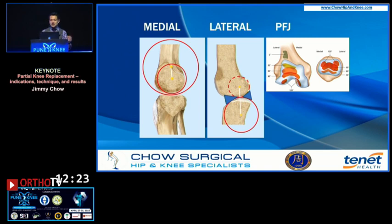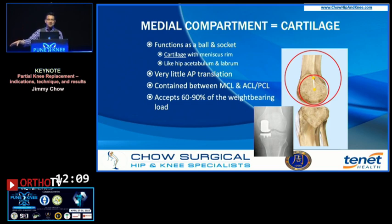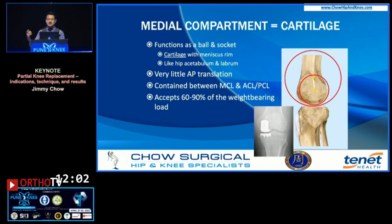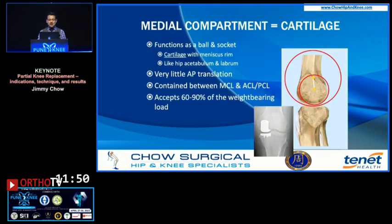The knee is basically three different joints that are all connected. When we talk about the medial compartment, it's really a more traditional arthritic picture — chondromalacia is the important part of the medial side. The meniscus is less important; it's actually more accurately called a labrum, because it doesn't move with the joint — it's just an extension of the joint itself. There's very little AP translation on the medial side.